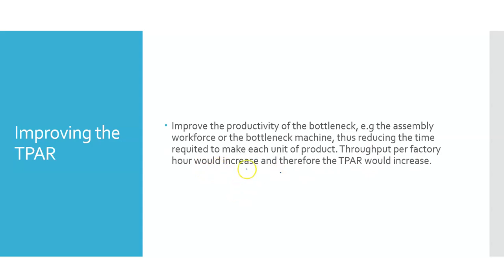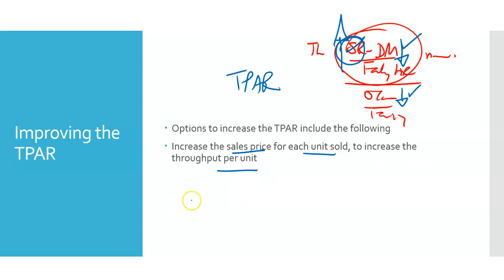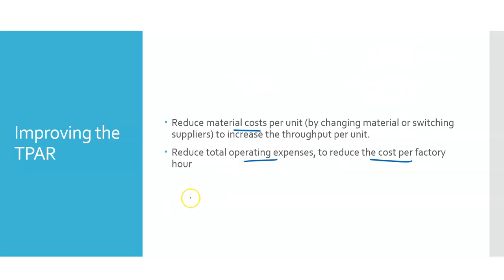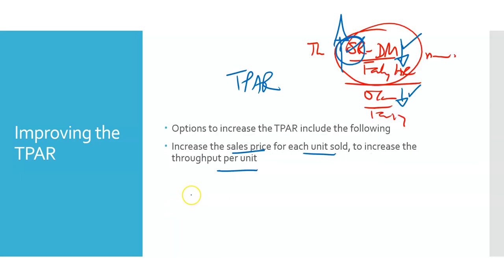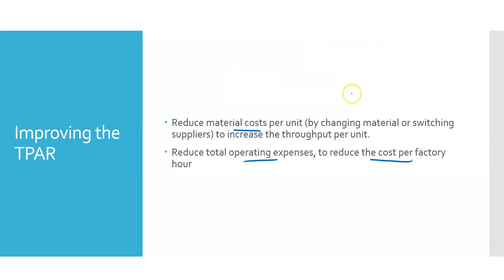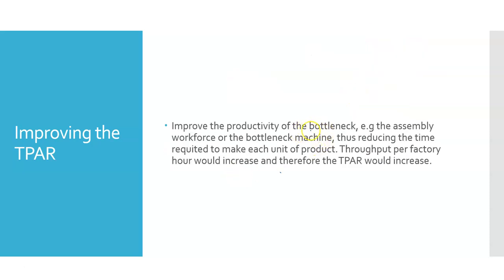Of course, as you can imagine, if you improve productivity or efficiencies, your operating costs will fall. Because the argument here is we're not making the raw material. If I can improve my efficiencies in terms of productivity, thus reducing the time to make each, therefore throughput per hour would increase.